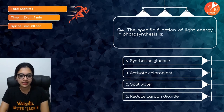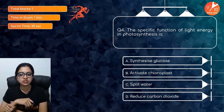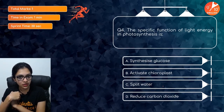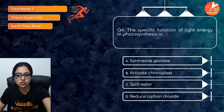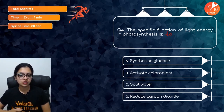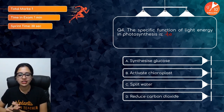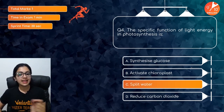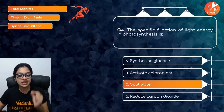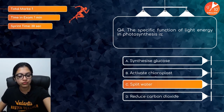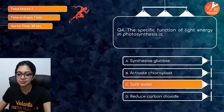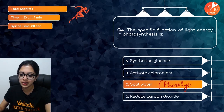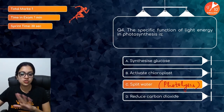Question four: The specific function of light energy in photosynthesis is — your time ends in three, two, one, go! Light energy, or the sun's energy, in photosynthesis is mainly to split water. We call this process of splitting water in the presence of the sun's energy by a special term — it is photolysis. Do not forget this term: photolysis.